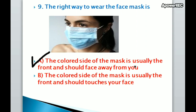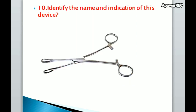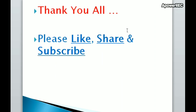Next question: identify the name and indication of this device. This is a sponge holding forceps, used to handle sponges, gauzes, or sensitive medical supplies. It is also used to hold antiseptic cotton swabs and gauzes before surgery. That's all for today's video — thank you all. If you are new here, please subscribe, like, and share this video with your friends.